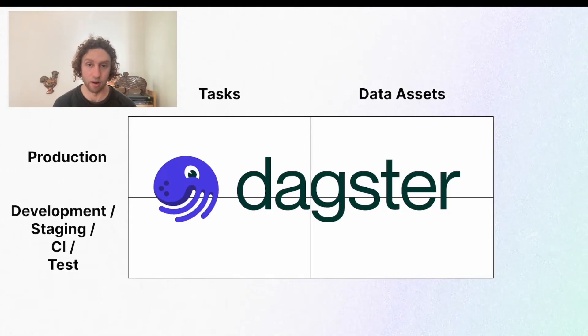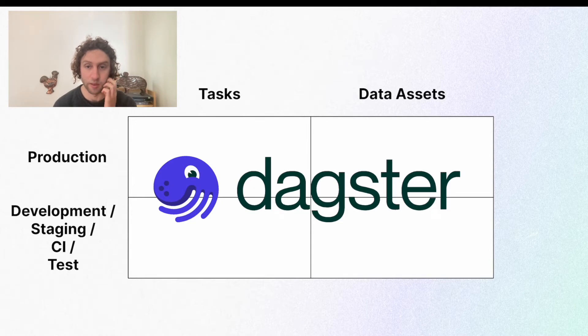Dagster takes a broader view. It was designed to assist with the holistic task of developing pipelines of data assets and evolving those pipelines over time. We believe that taking this broader view can make data teams dramatically more productive and make data pipelines dramatically more reliable. To make this more concrete, let's zoom in on the phases of the development life cycle and look at what's the difference between Dagster and Airflow when developing data pipelines.